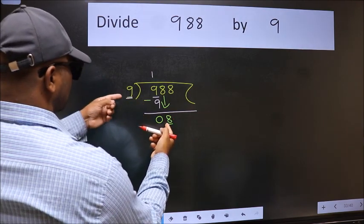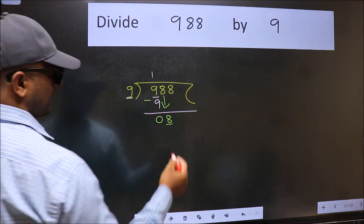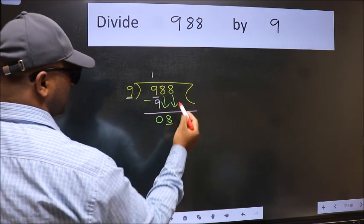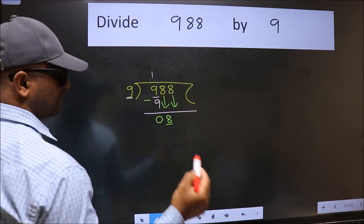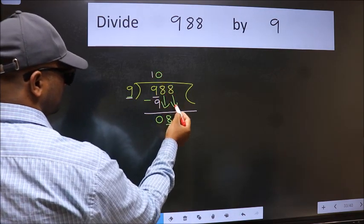8 is smaller than 9, so we should bring down the second number. And the rule to bring down second number is we should put 0 here. Then only we can bring this number down.